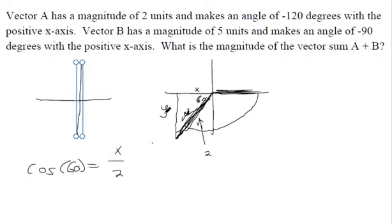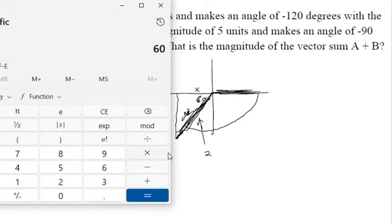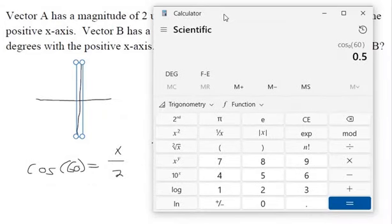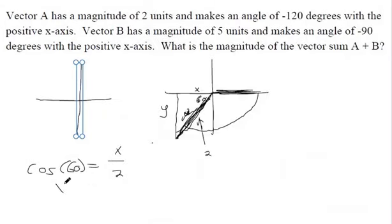So the adjacent is x, because y is what's opposite of 60. And then to solve that, you just take 60 and find out what cosine is. And then to get x by itself, you've got to multiply that 2 to both sides. So x equals 1.